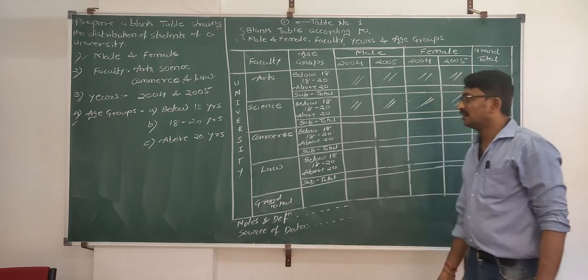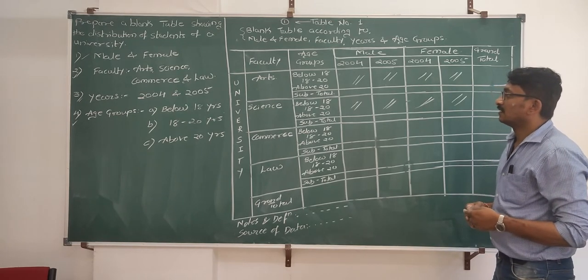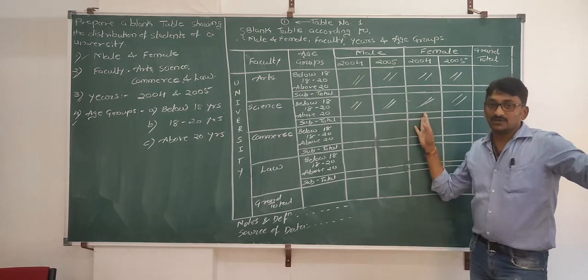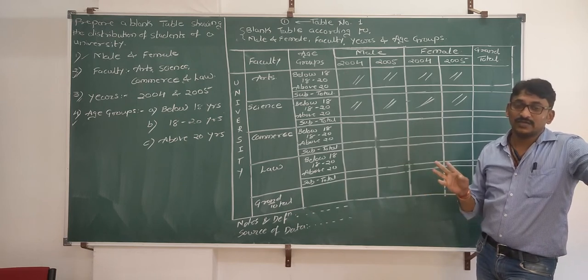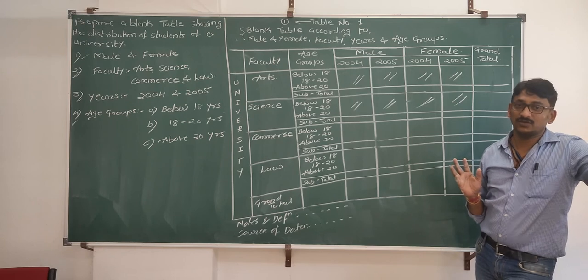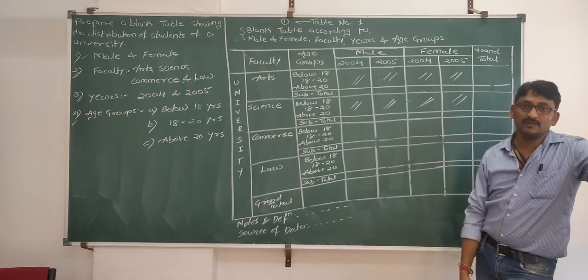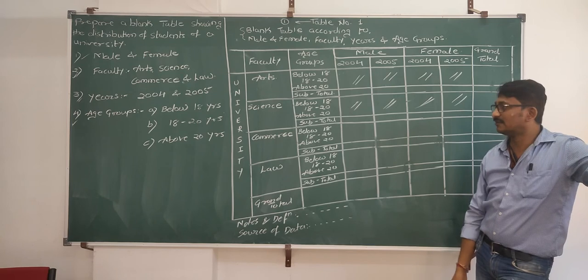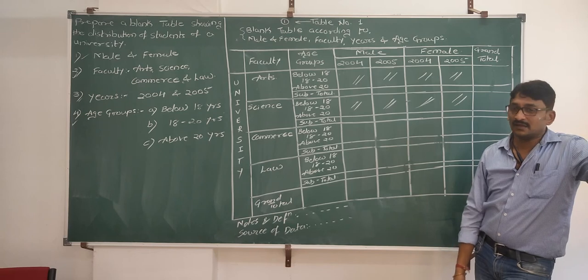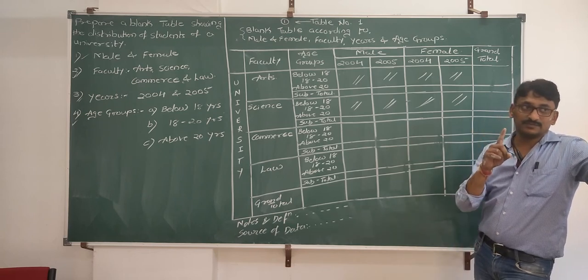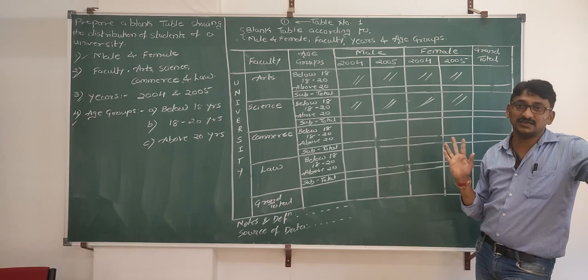This is the most important part: once you know the structure of how to prepare a blank table, you can easily prepare statistical tables — because a statistical table is just a blank table with values filled in. The procedure will be a little different, but you can easily manage once you have a clear idea about the blank table. In the next video I will take one more problem, and then we will go to the statistical table afterwards.